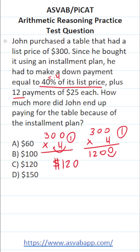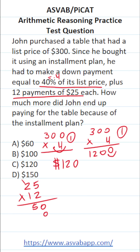Now let's calculate how much he had to make in payments. He had to make 12 payments of $25 each, so that's 25 times 12. 5 times 2 is 10, carry a 1. 2 times 2 is 4, plus 1 is 5. Add a zero placeholder. 1 times 5 is 5. 2 times 1 is 2. Adding it up: 0, 5 plus 5 is 10, carry a 1, giving 3. So he had to make $300 in payments.